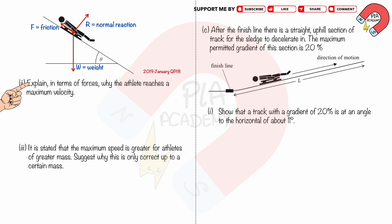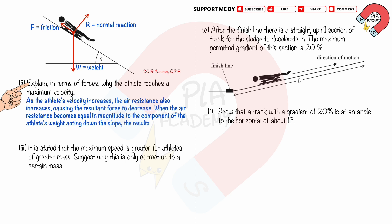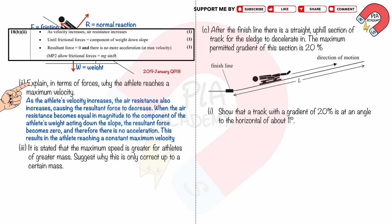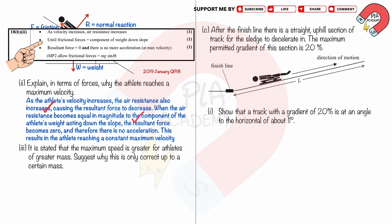Part c: Explain in terms of forces why the athlete reaches a maximum velocity. As the athlete's velocity increases, air resistance also increases, causing the resultant force to decrease. When the air resistance becomes equal in magnitude to the component of the athlete's weight acting down the slope, the resultant force becomes zero and therefore there is no acceleration. This results in the athlete reaching a constant maximum velocity. You get 3 marks for: as velocity increases air resistance increases, until frictional force equals component of weight down slope, and resultant force equals zero with no acceleration.